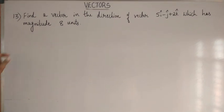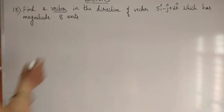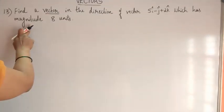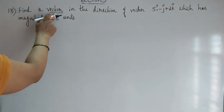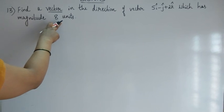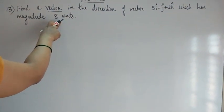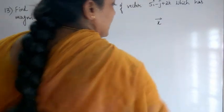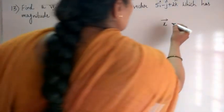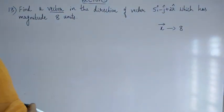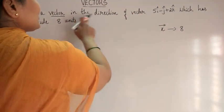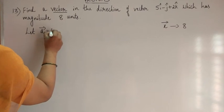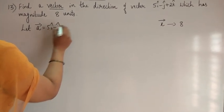Next problem: find a vector in the direction of a given vector which has magnitude 8 units. We have to find a vector whose direction is given and whose magnitude is 8. We don't know that vector, so let us call it X vector. Its magnitude is 8. The direction is given, so let vector A equal 5i-cap minus j-cap plus 2k-cap.